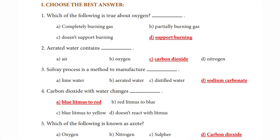Choose the best answer. Which of the following is true about oxygen? Answer: Option D – Supports burning. Aerated water contains: Answer Option C – Carbon Dioxide. Solvay process is a method to manufacture: Answer Option D – Sodium Carbonate. Carbon Dioxide with water changes: Answer Option A – Blue litmus to red. Which of the following is known as dry ice? Answer Option D – Carbon Dioxide.